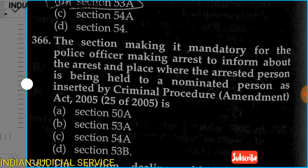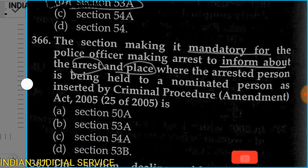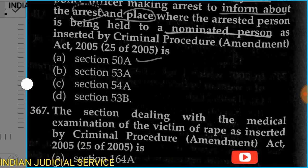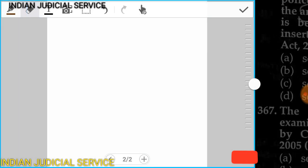Question 366: The section making it mandatory for a police officer making an arrest to inform about the arrest and place where the arrested person is being held to a nominated person, as inserted by the Criminal Procedure Amendment Act 2005, is which section? Option A: Section 50A. Option B: Section 53A. Option C: Section 54A. Option D: Section 53B.